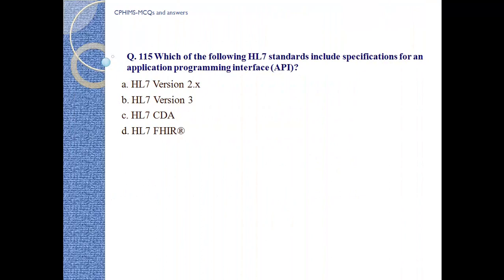Question number 115. Which of the following HL7 standards includes a specification for an application programming interface (API)? A) HL7 version 2.x, B) HL7 version 3, C) HL7 CDA, D) HL7 FHIR. Answer: D, HL7 FHIR.